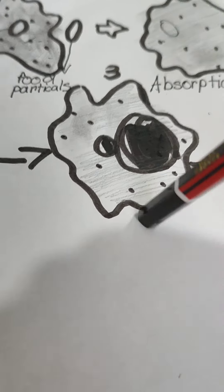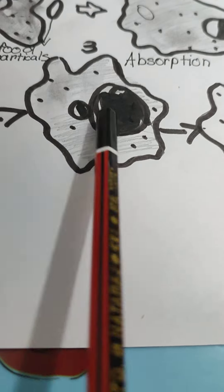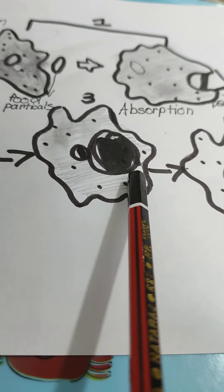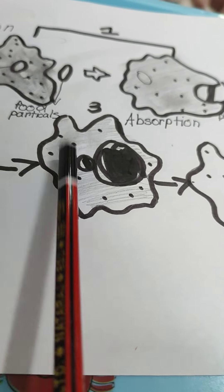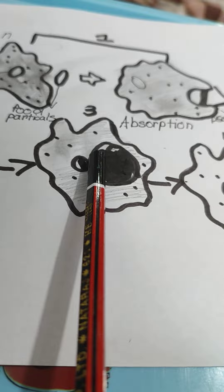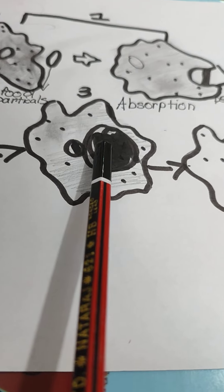The third step is absorption. You can see the food is very big. The food vacuole and cytoplasm are absorbing the nutrition, and some of the nutrients are going to the amoeba for its growth.